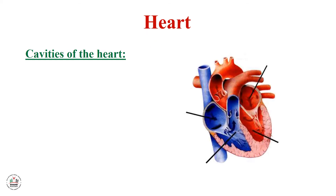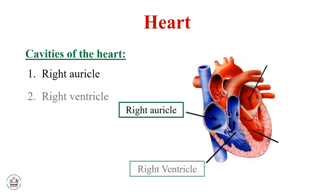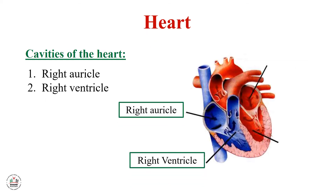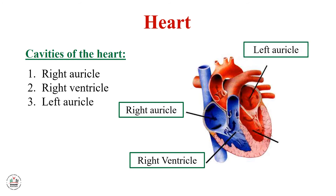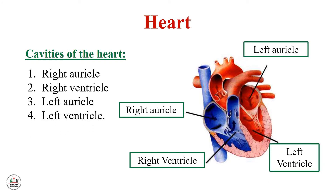The cavities of the heart are: right auricle, right ventricle, left auricle, and left ventricle. So we have four cavities, or four chambers.